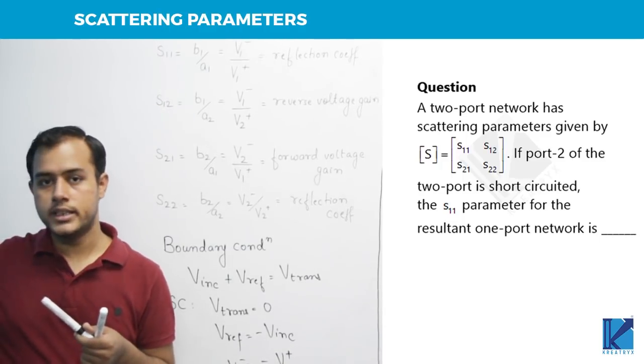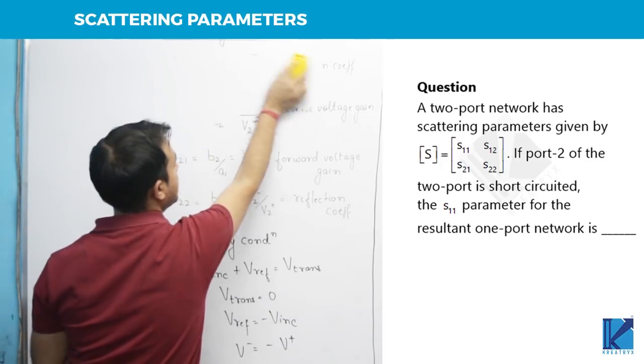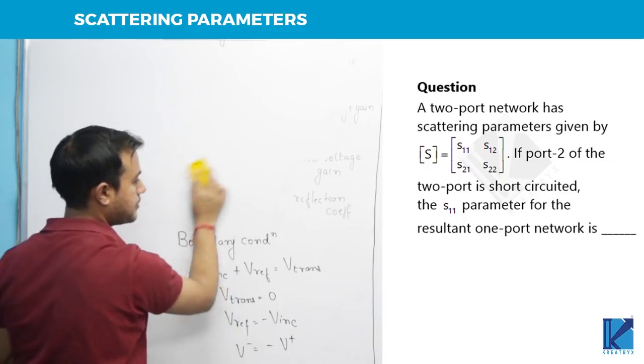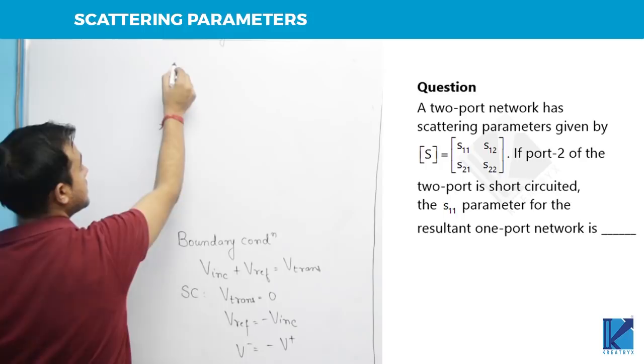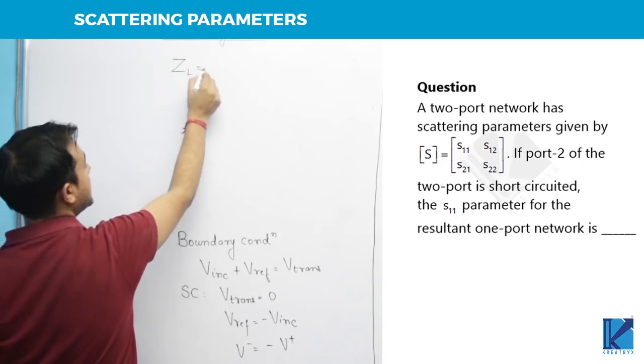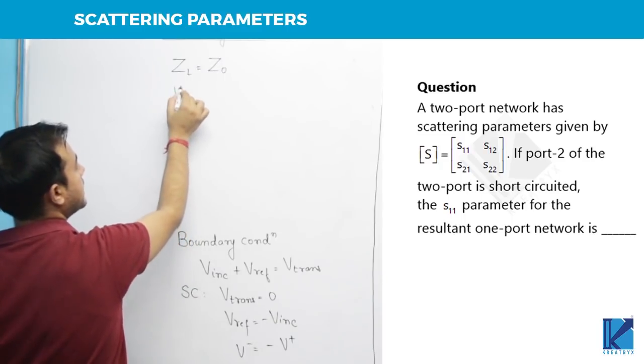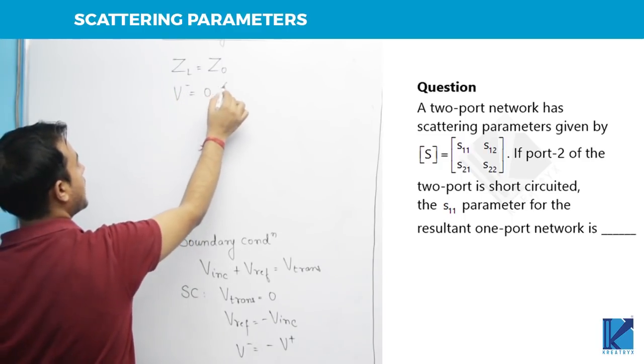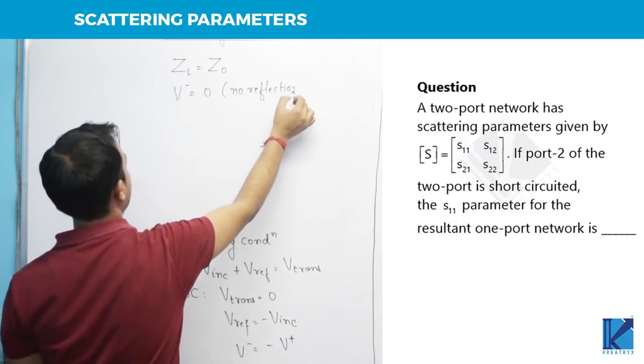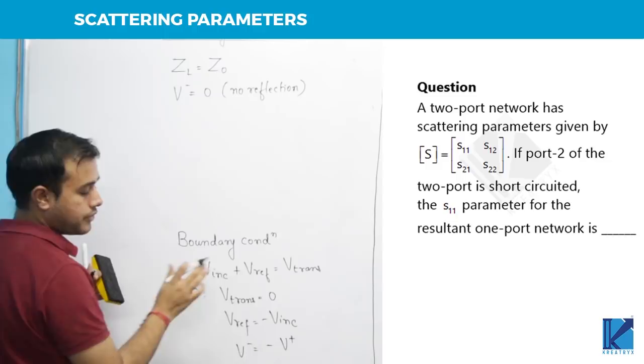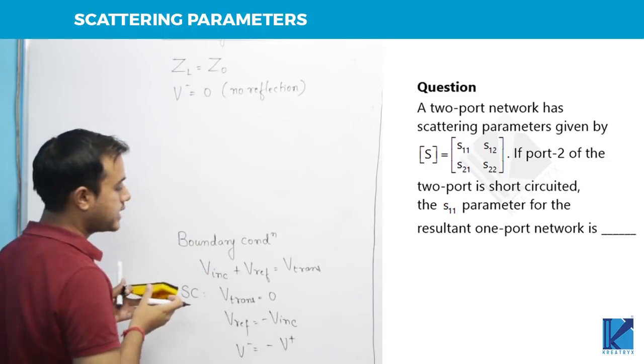And the other thing that you need to know is, what happens if a line is terminated in characteristic impedance? If you terminate the line in characteristic impedance, that is, load impedance is same as Z naught, natural or characteristic impedance, in that case there is no reflection. These two things you must always know: one, what happens when we short circuit the line; other, what happens when we terminate the line in characteristic impedance.